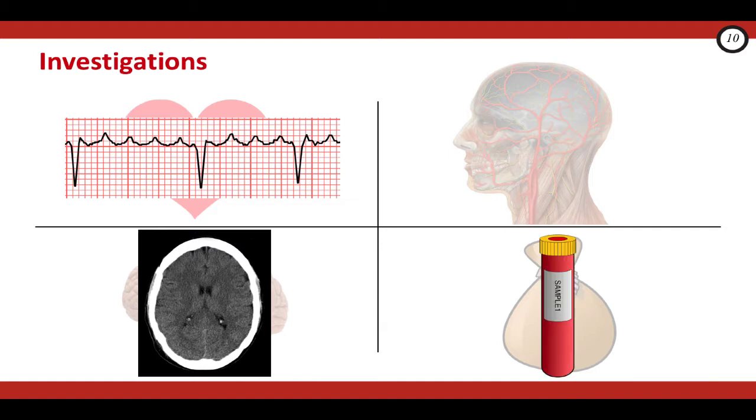Third, you'll want some blood work, including CBC, lytes, creatinine, and an INR. This again will help you rule out some unexpected causes of your patient's presentation. And the INR will help you in managing your patient in case he or she's actually had an intracranial hemorrhage instead of a TIA.